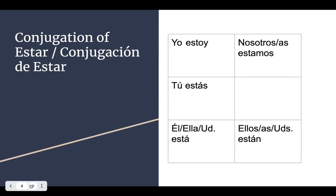For the conjugations of estar, we have: yo estoy — I am; tú estás — you are; él, ella, usted está — he is, she is, you formal are; nosotros or nosotras estamos; and ellos or ellas están and ustedes están — which means they are or you guys are.